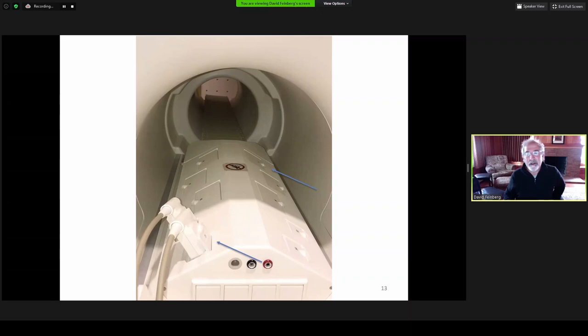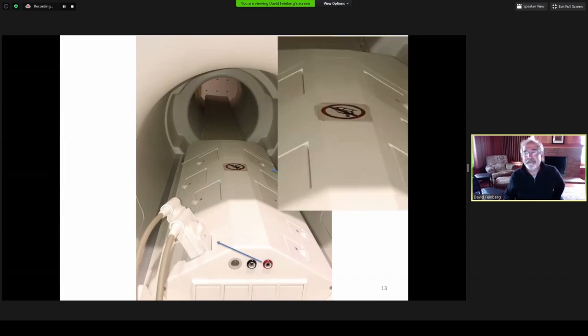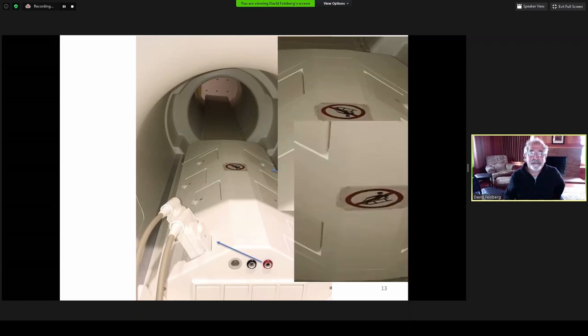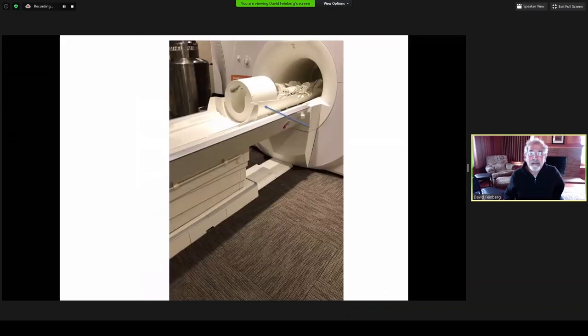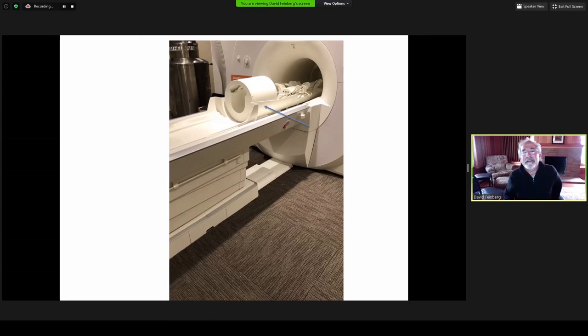You see the connectors. This is the coil connector box connected to the energy chain cables going out the back. The table has an extender which allows the head receiver coil to go into the gradient coil, and all the cable connectors are in the back.